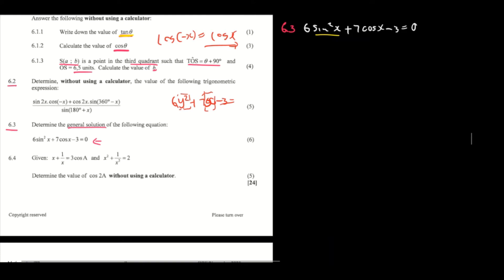So we're going to change sine squared x. You're going to have 6 times open bracket (1 minus cos² x) — that is your identity. So if you check your identities: 7 cos x minus 3 equals 0.